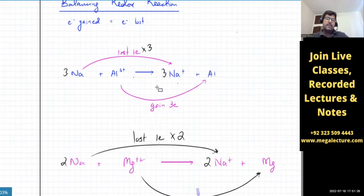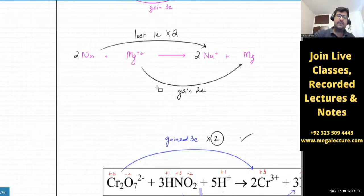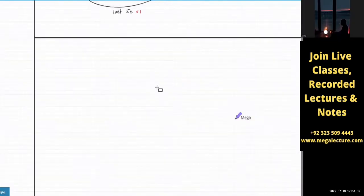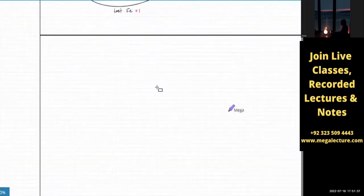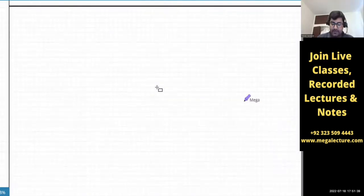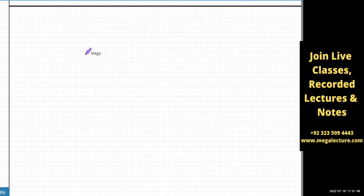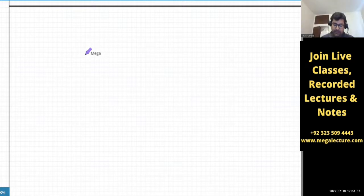Now we're going to start A2 chemistry. I'm going to write a reaction and try to balance it, and I'm going to explain what you're going to study in A2 electrochemistry. The whole topic is A2 electrochemistry.